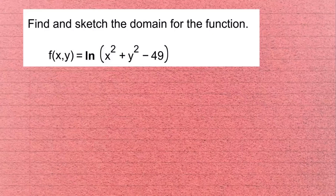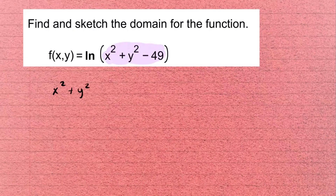Welcome everyone. We have a multivariable function and we want to find the domain and sketch it in the xy-plane. The function is ln(x² + y² - 49). Since it is a natural log, the argument must be strictly greater than zero, so we take x² + y² - 49 and require it to be bigger than zero.